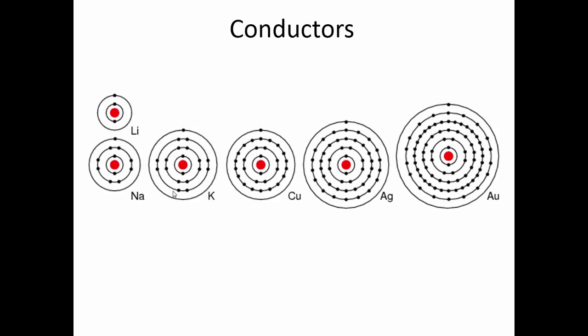Conductors are good conductors because they have a single electron in the valence shell that is held onto very loosely. In fact, it's not really even tied to the atom itself — it's free to move around. If you apply an electric field, the electron moves along with it, and it takes very little energy to pull that electron away. Since that free electron becomes a charge carrier, elements with one electron in the valence shell are very good conductors.